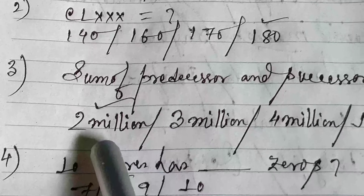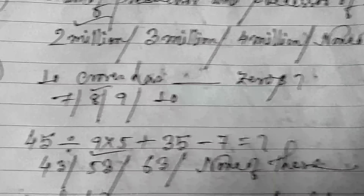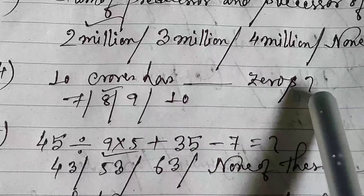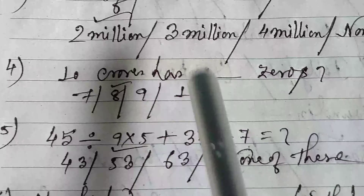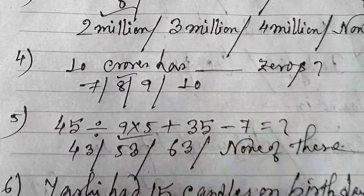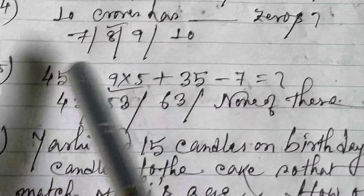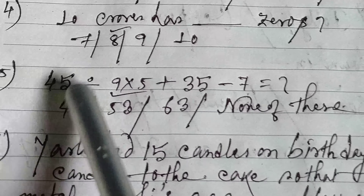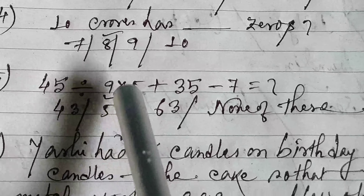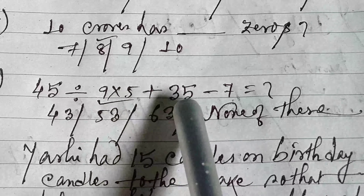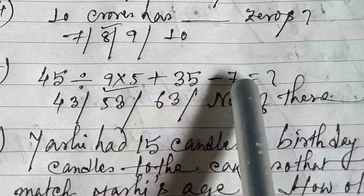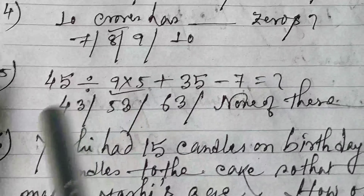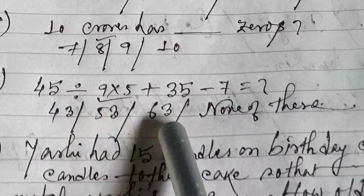Next: sum of predecessor and successor of 1 million — 1 million ka predecessor and successor ka sum nikalna hai. Options are 2 million, 3 million, 4 million, none of these. The answer is 2 million. A crore has 8 zeros.